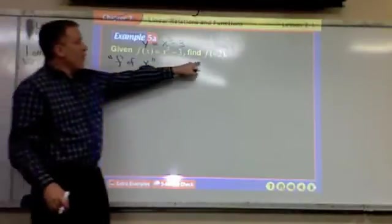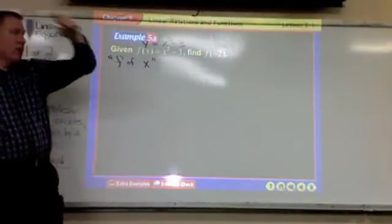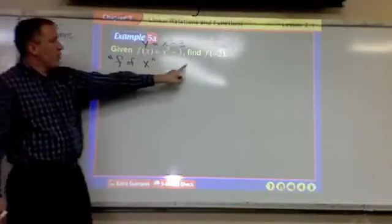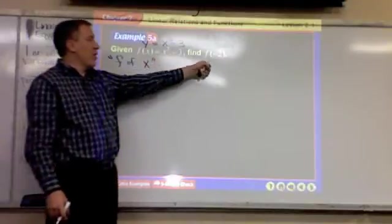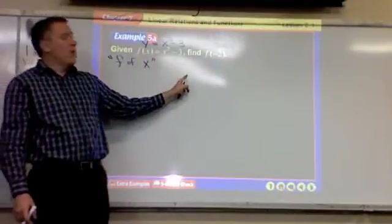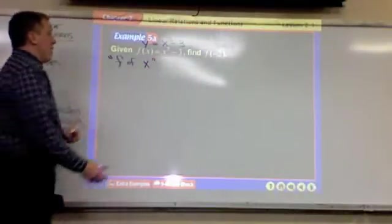When it says f of negative 2 instead of f of x, what do they have instead of x now? Negative 2. So all you're going to do is take all the x's and change them to negative 2.